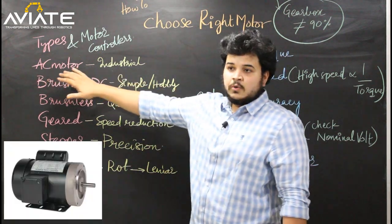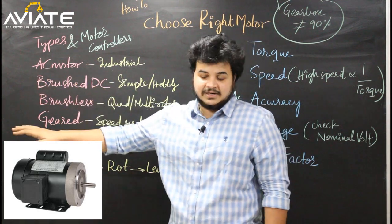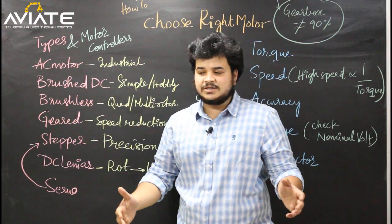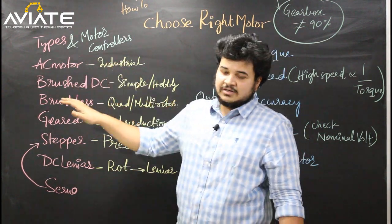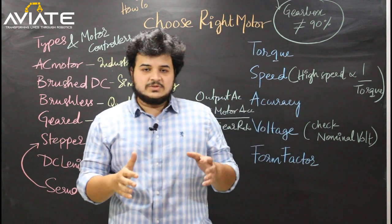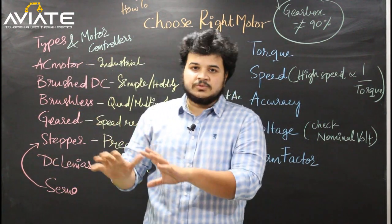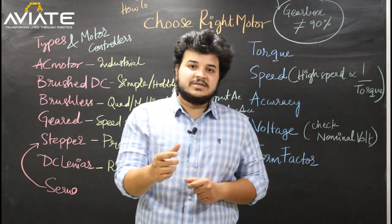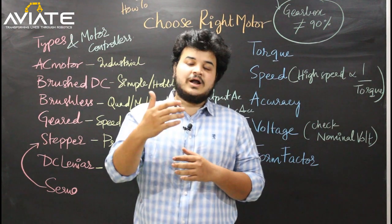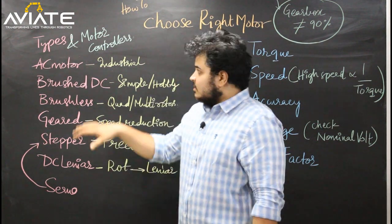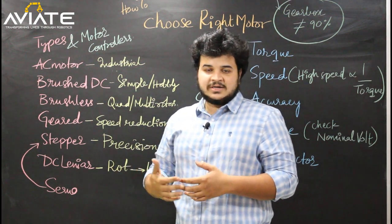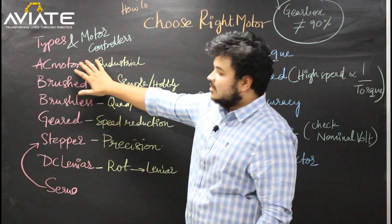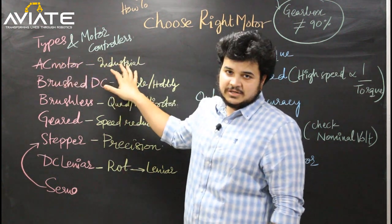The first one is an AC motor, which takes AC input — alternating current. It's not driven from a battery or a constant power source. It has applications in industrial settings. Because these motors require an AC power source, and your robot's controller and sensors all require DC input, you would need external circuitry to convert DC to AC. These motors have higher power ratings, higher torques, and higher operating speeds — quite different from a mobile robot. Hence, these motors have greater application in industrial areas.